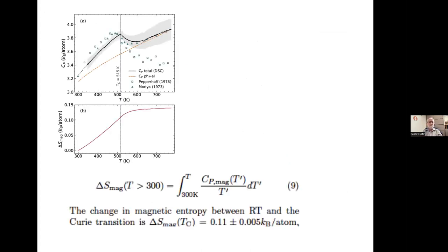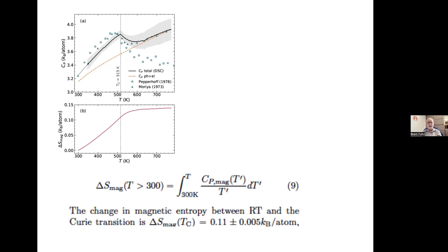We obtained the magnetization under temperature using a calorimeter to look at heat capacity as a function of temperature. Our curve is the solid black line, with a couple of literature curves for comparison. Taking out background from differential scanning calorimetry, we integrated the heat capacity divided by T to get the magnetic entropy. Above the phonon and electronic contributions, we get an entropy of about 0.1 k_B per atom in this region.